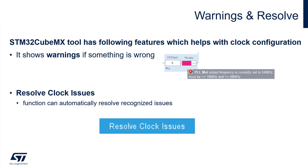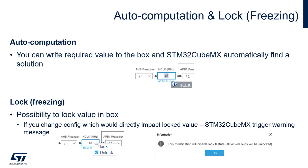The STM32CubeMX tool has several features which can help with clock configuration. It shows warnings if something is wrong. It has a Resolve Clock Issues function which can automatically resolve recognized issues. Then there is the auto-computation feature — you can write your required value into a box, press Enter, and CubeMX will automatically find a solution and calculate your required frequency. Another feature is a lock — it is possible to lock a value in a box. If you change a configuration that would directly impact the locked value, CubeMX triggers a warning message.